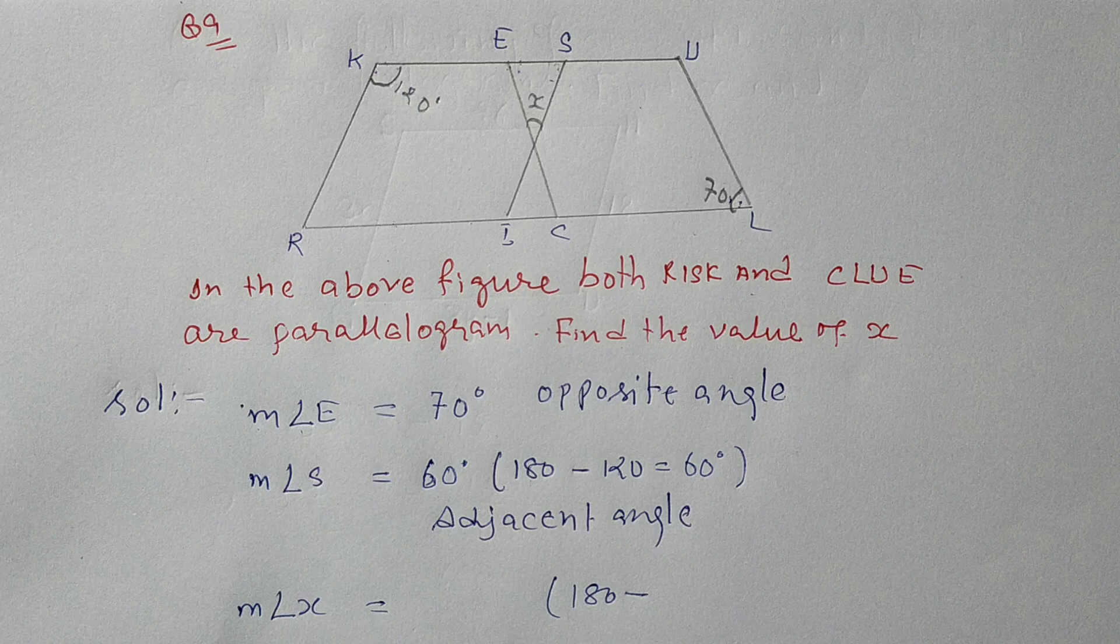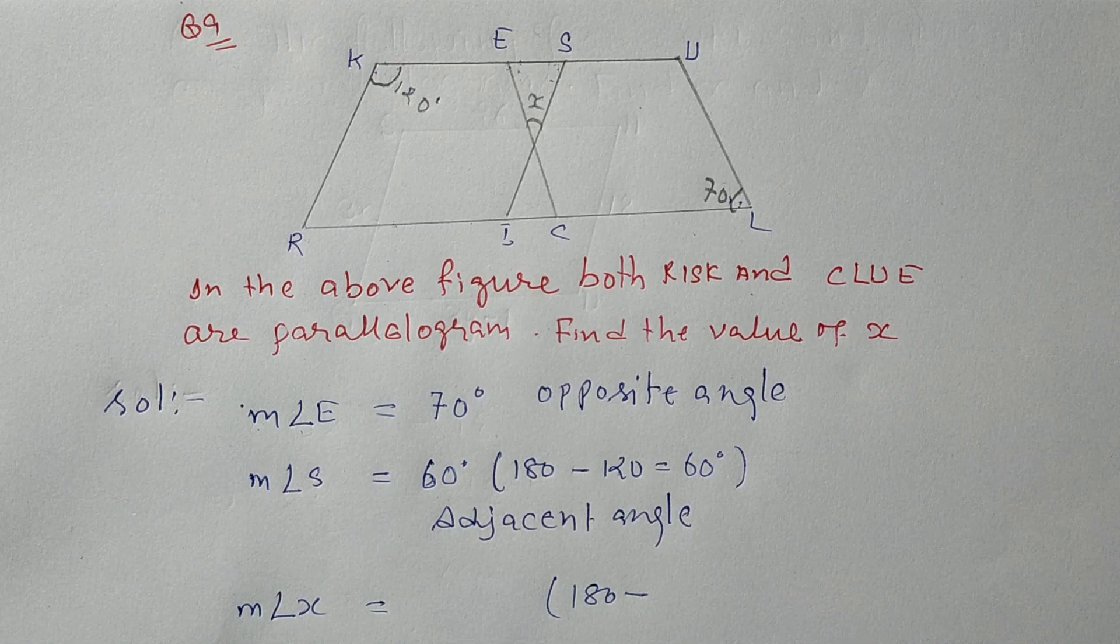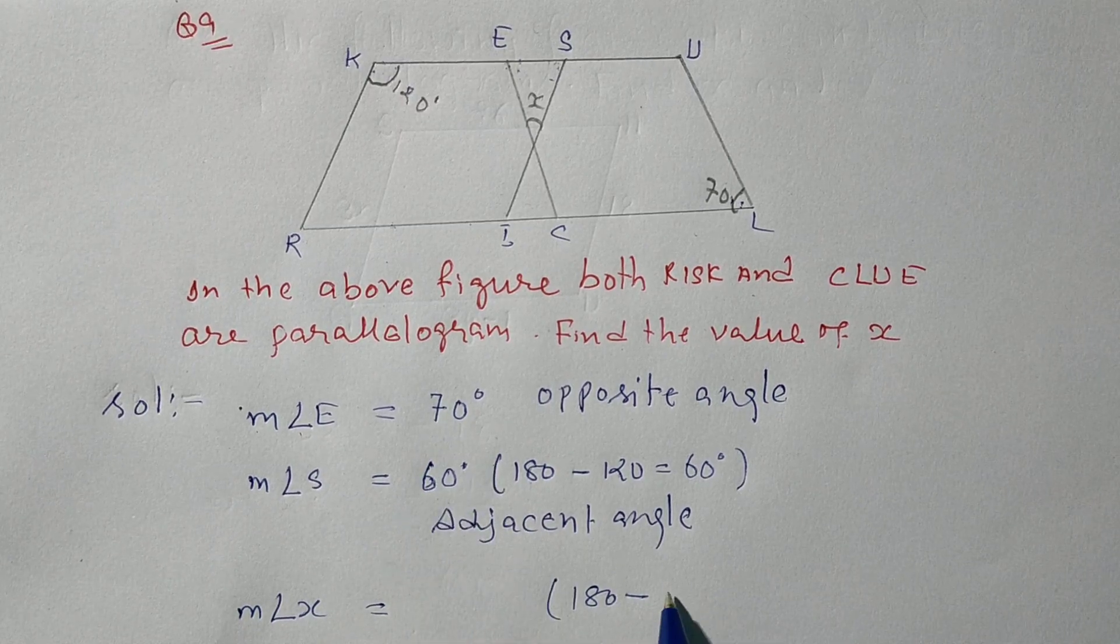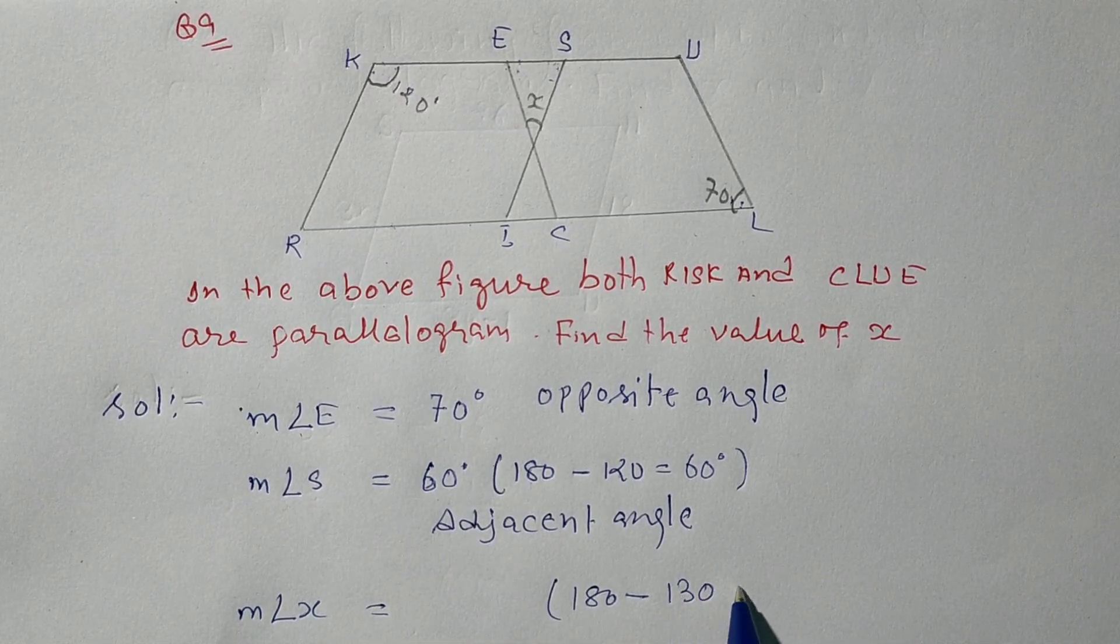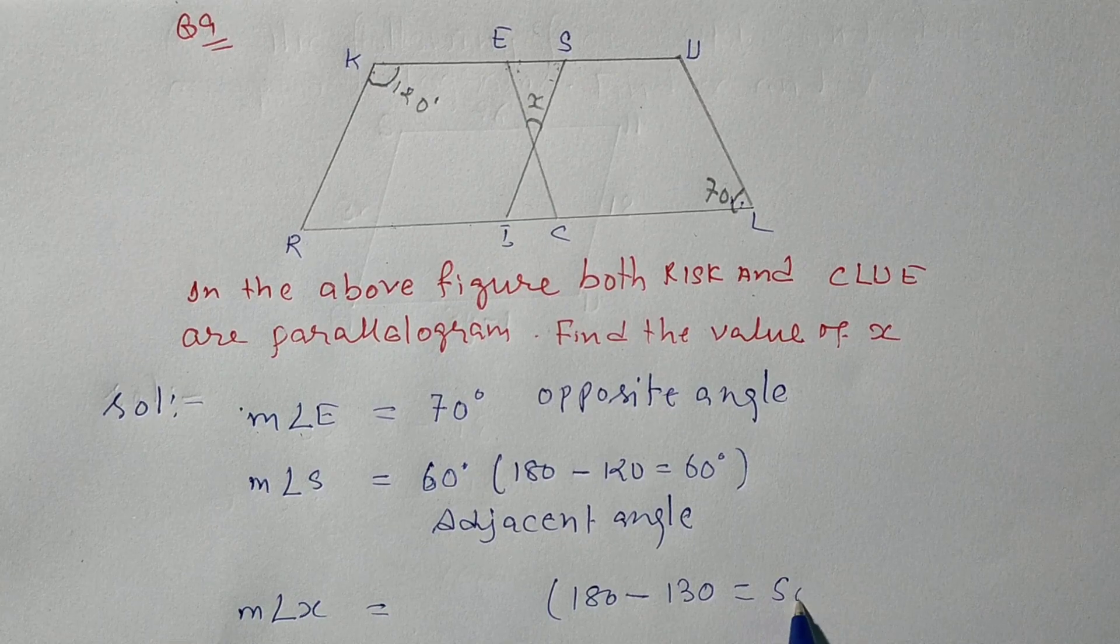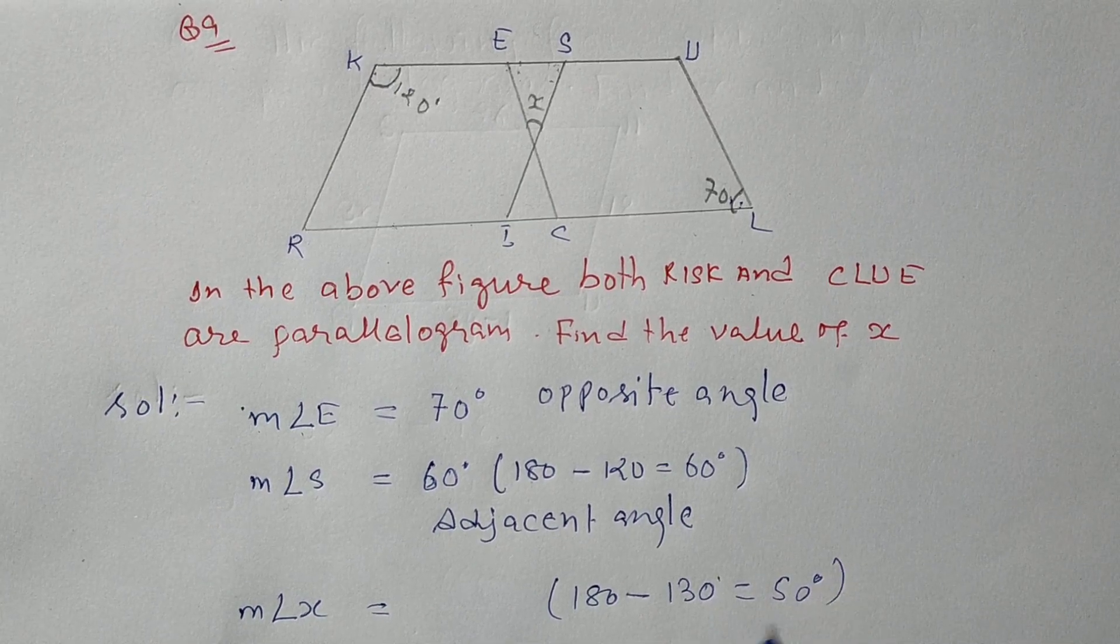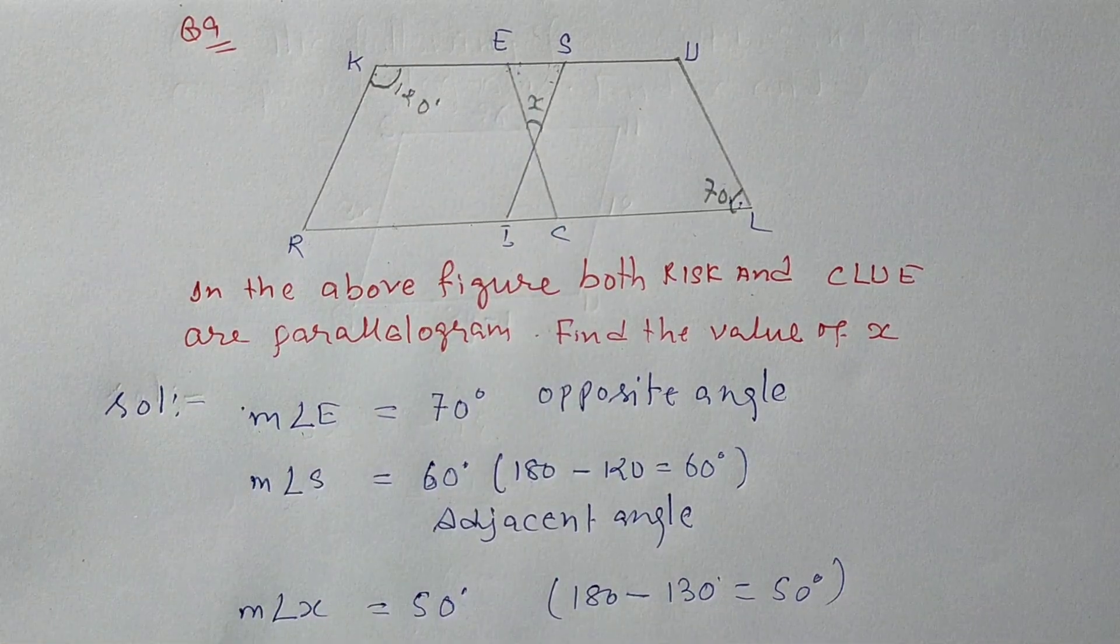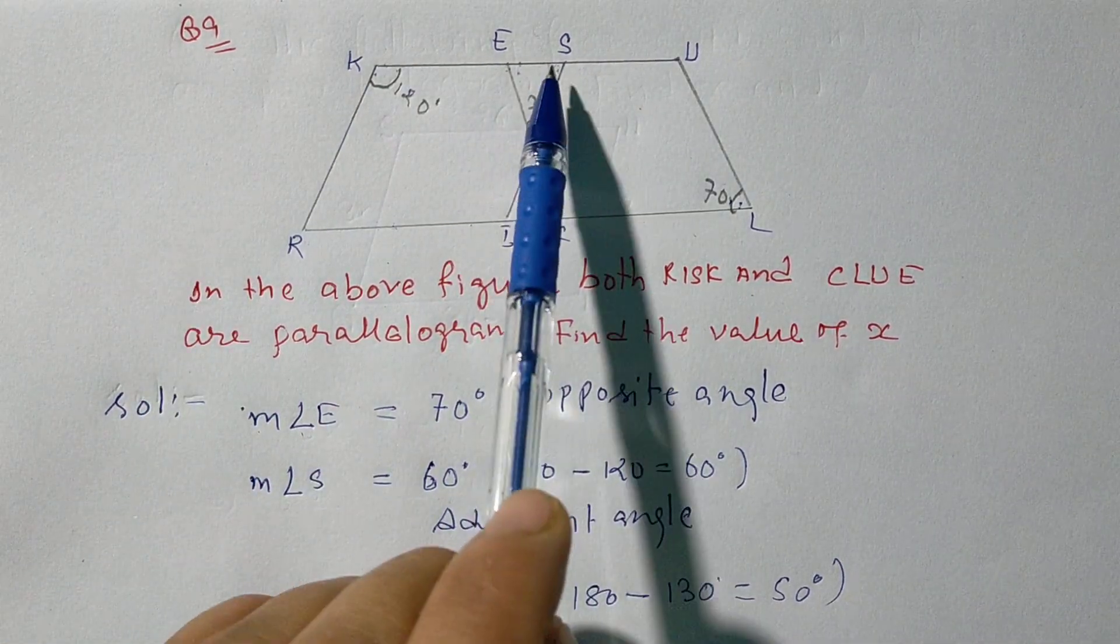Sum of angles of a triangle is 180 degrees. Property of the sum of triangle is 180 degrees. So 180 degrees minus 70 plus 60 equals 130.